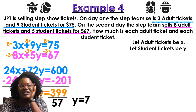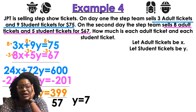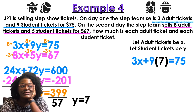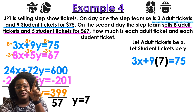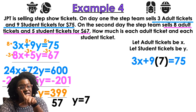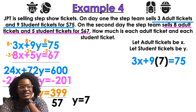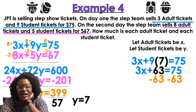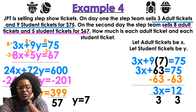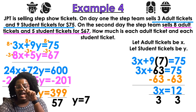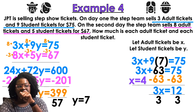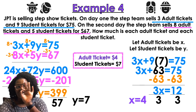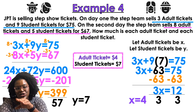Now I plug y = 7 into one of the original equations. Using the blue one: 3x + 9(7) = 75, so 3x + 63 = 75. Subtract 63 from both sides: 3x = 12. Divide by 3 — x equals 4. Remember: X was adult tickets and Y was student tickets. So adult tickets are $4 and student tickets are $7.